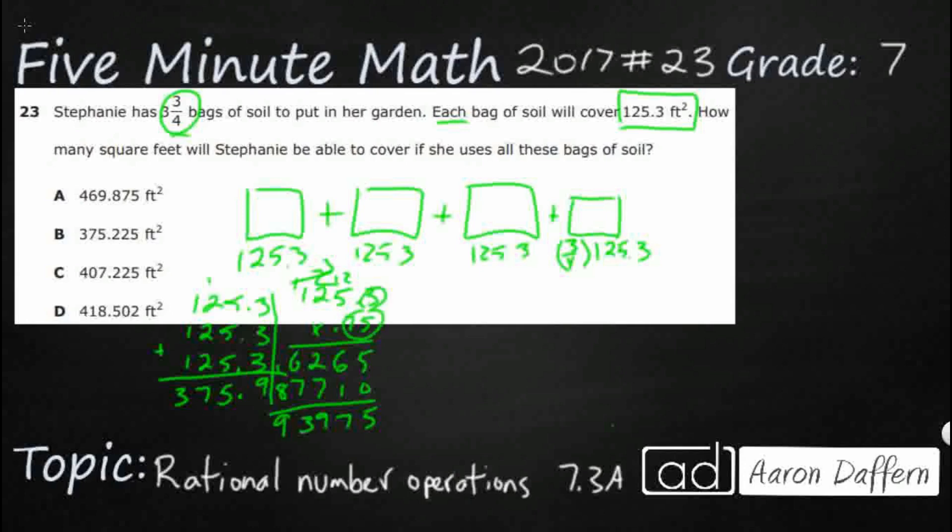So I've got 1, 2, 3 digits behind the decimal in my factors. 1, 2, 3 digits behind the decimal in my product. So three-quarters of 125.3 is going to be 93.975.